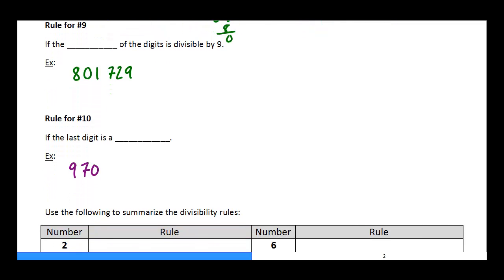Number 9 is also a little bit of a trickier number and it will remind you of the rule for number 3. So what we say is if the sum of the digits is divisible by 9, then the entire number is divisible by 9. So this is a lot like our rule for 3 where we add everything up: 8 plus 0 plus 1 plus 7 plus 2 plus 9. We have to add all of this up. So 8 plus 0 is 8, plus 1 is 9, plus 7 is 16, plus 2 is 18, plus 9 is 27. And we ask ourselves, is 27 divisible by 9? Yes, it is. So that means this entire number must be also divisible by 9.